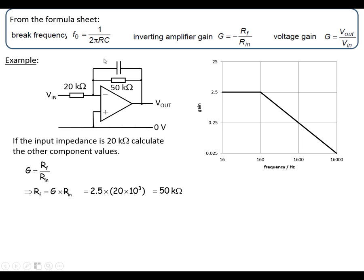Next, work out the value for the capacitor using 1 over 2πRC. Rearrange this formula—it's really easy because everything ends up at the bottom of the fraction. We get C equals 1 over 2πRf0. The resistor we're going to use is the feedback resistor because it's in the same part of the circuit as the capacitor. Putting the values in, we end up with 20 nF.